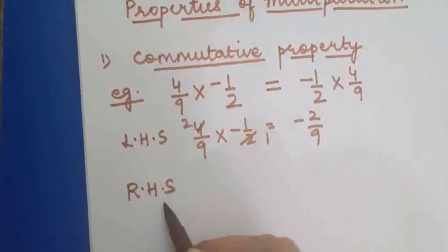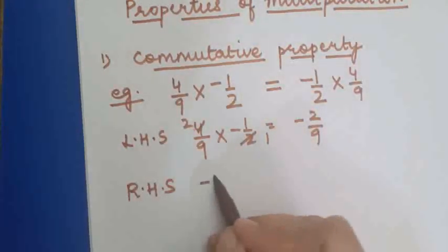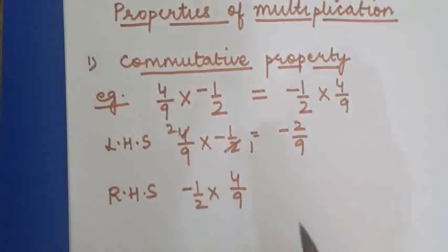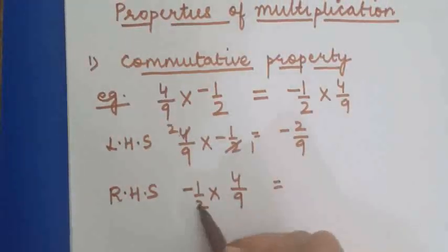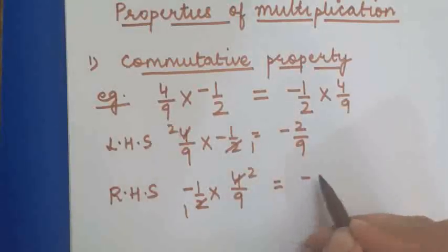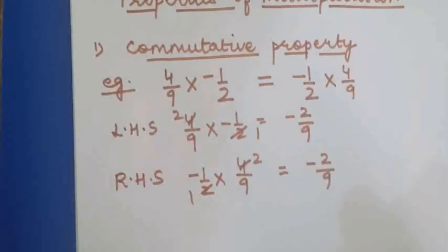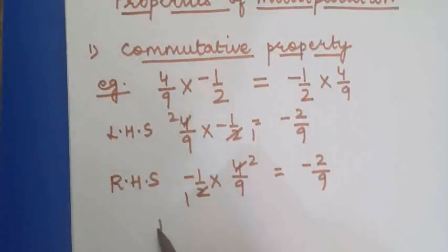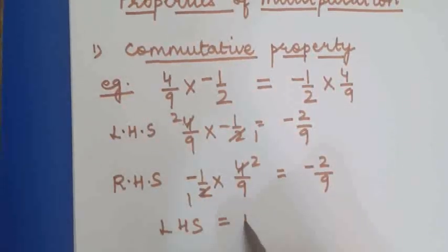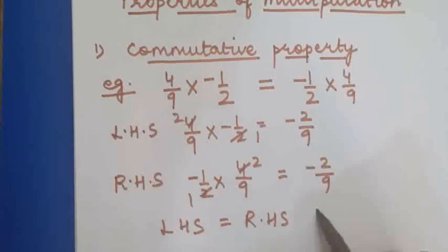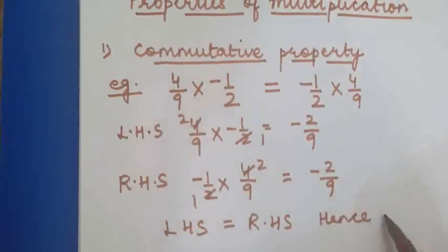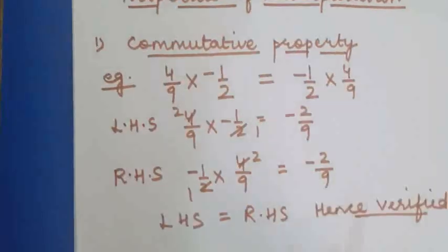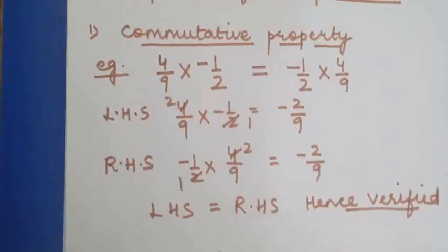Similarly, solve the RHS side: minus 1 upon 2 multiplied by 4 upon 9, and again cancel. It will give minus 2 upon 9. You can see in both cases LHS and RHS are the same — they are both equal — and hence it verifies the commutative property. I hope this is clear.